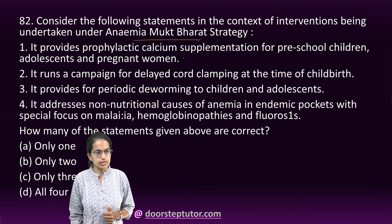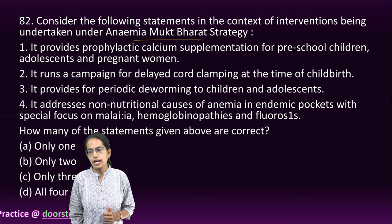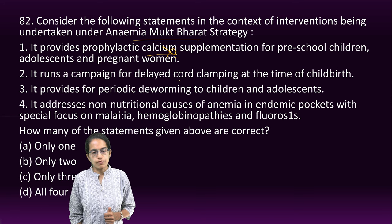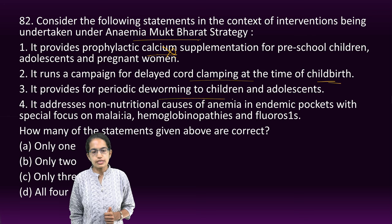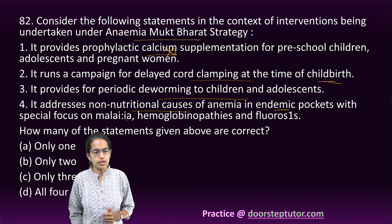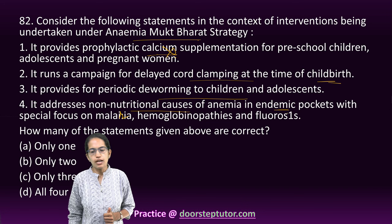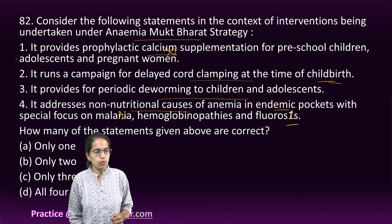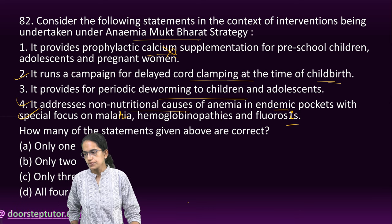The next question is about Anemia Mukt Bharat — what is the right strategy? It talks about providing iron and folic acid, not calcium. It runs a campaign for delayed cord clamping at childbirth, provides deworming, and addresses non-nutritional causes of anemia in areas with higher prevalence of malaria and fluorosis. So options 2, 3, and 4 are the right answers.